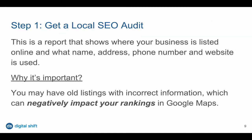Step one is the easiest step in the process. You just need to provide your business name, address, phone number, and website address, and that information will then be used as part of the audit. If you have information on any old addresses or any old phone numbers, that will also be helpful to find old outdated listings and duplicates. You can get a local SEO audit done by us — all we need is your business name, address, and phone number.